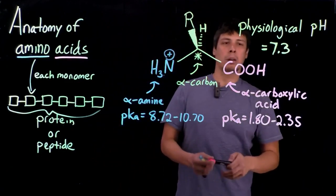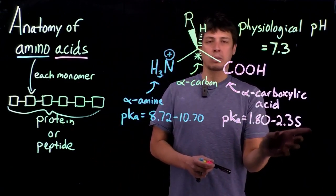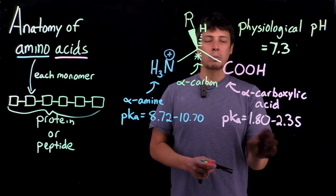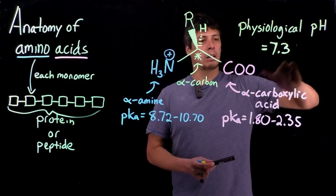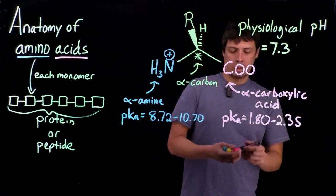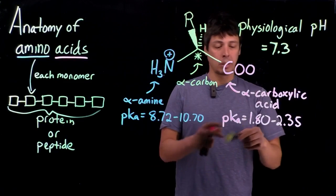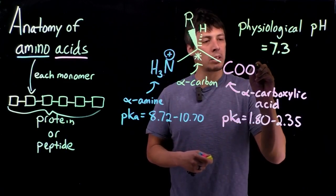Whereas, for the carboxylic acid, the pKa is well above the range of 1.8 to 2.35, and so, since this pH is above that pKa range, this is going to be deprotonated.